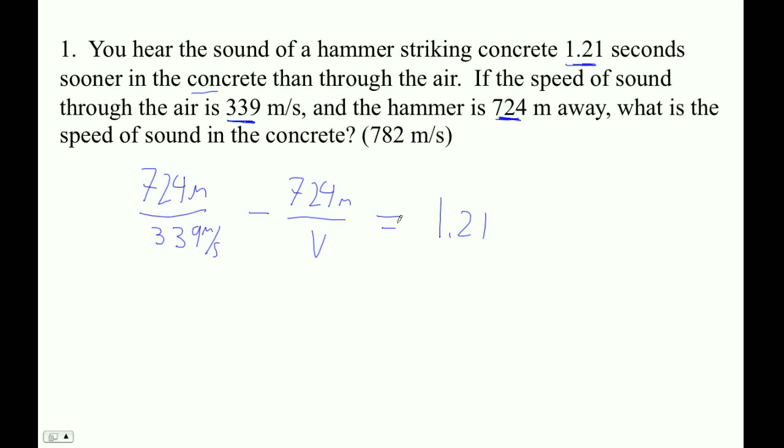And then the way to solve for this is to just simply rearrange this. And I guess what we're going to do is we're going to go 724 divided by V is equal to 724 over 339 minus 1.21. So I just sort of flip these around and did some things with a minus sign and everything like that. And then I'm going to take this side here, and what do we do?